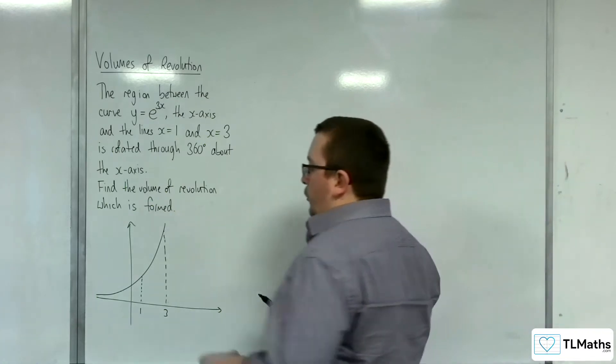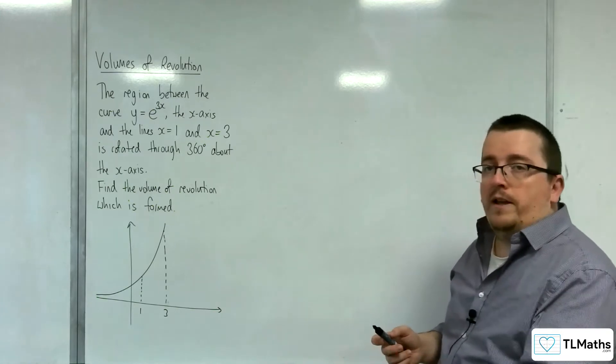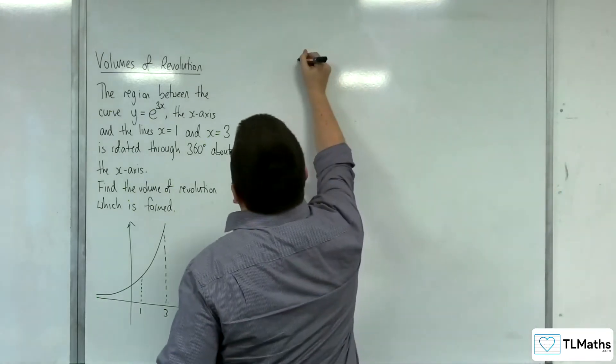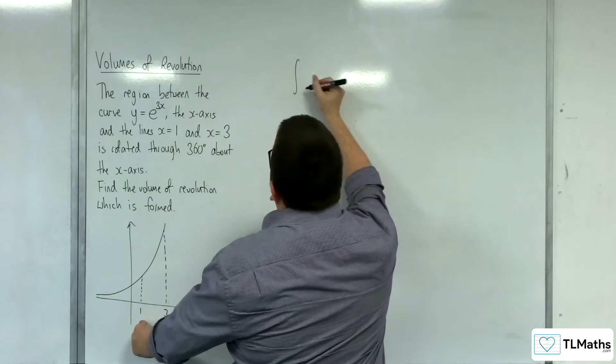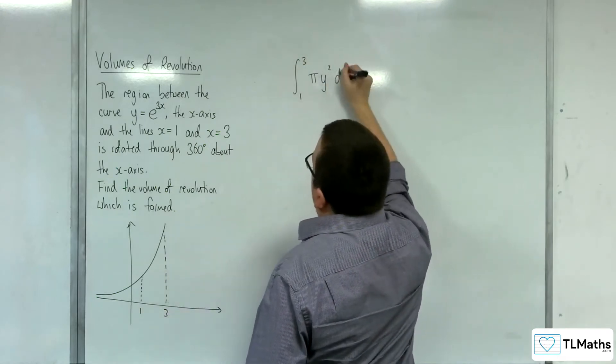Because we're rotating about the x-axis, we use the integral of pi y squared dx. So it's going to be the integral between 1 and 3 of pi y squared dx.